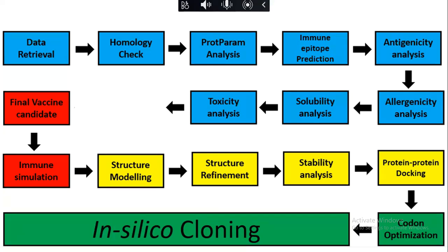Just giving you a quick recap: I have shown you how to retrieve data, perform homology checks, PRAM analysis, and other analyses. From there, we did structure modeling, composed the vaccine structure, performed refinement, stability analysis, and protein-protein docking. Today I will perform codon optimization, and in the last video I will show you in silico cloning.